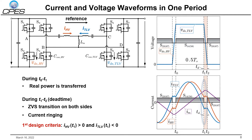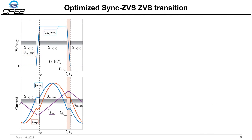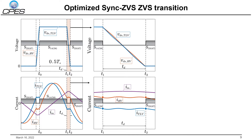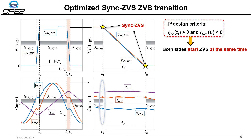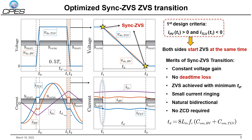If the current reference direction is defined from left to right, the first desired criteria requires current IHV to be positive and ITLV to be negative. With this first criteria achieved, both sides will start the ZVS transition at the same time at T1. If both sides ZVS transition can also end at T2, the sync ZVS transition is achieved. The merits of sync ZVS transition include constant voltage gain, no dead time loss, ZVS achieved with minimum dead time, small current ringing, natural bidirectional power flow, and no ZCD circuit required.